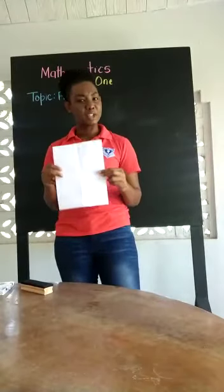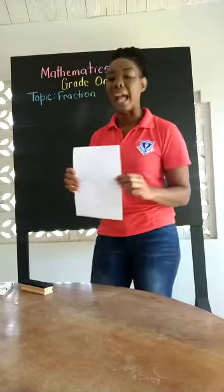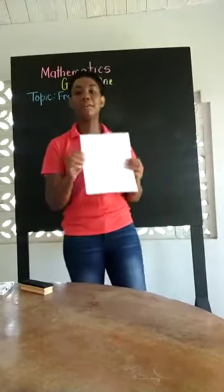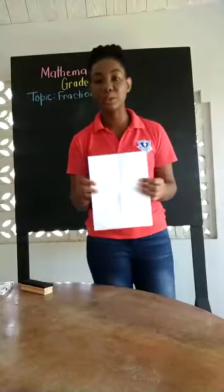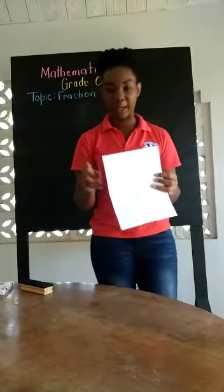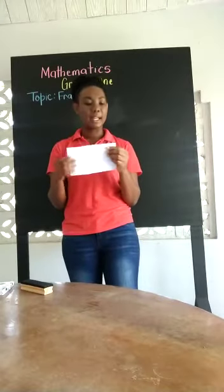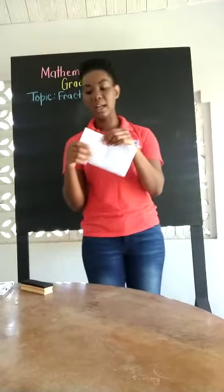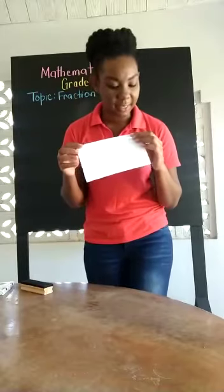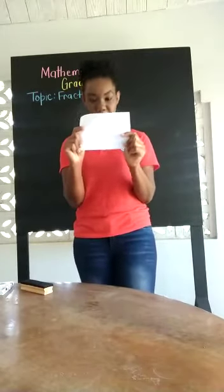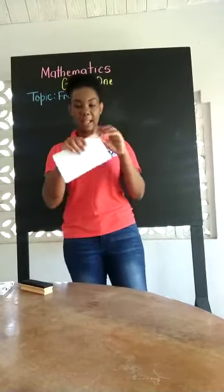What do you think I should do to get this paper into a half? I can fold it into two equal parts. Now this is my paper and I am folding my paper into two equal halves by ensuring that the ends are together. See my two equal parts — this is my half. I just folded my paper into a half.